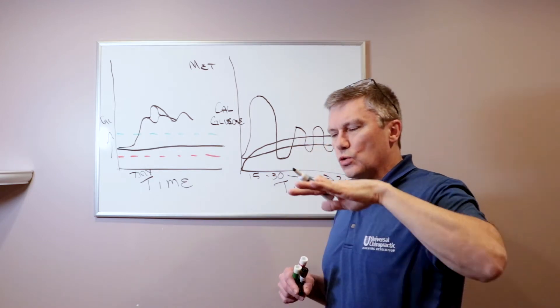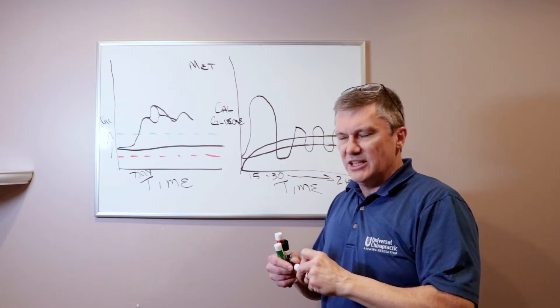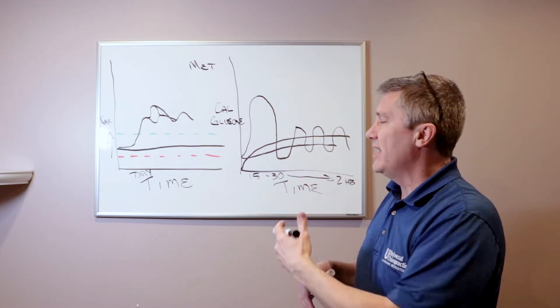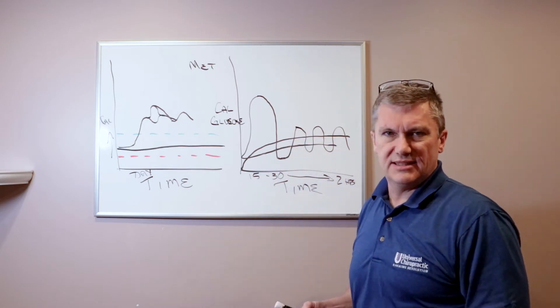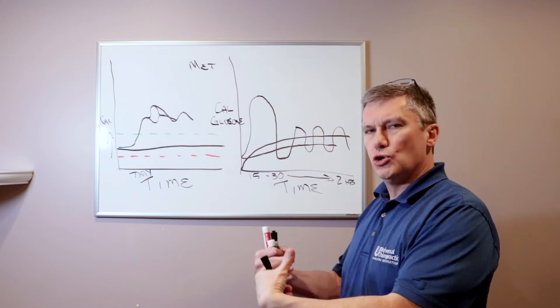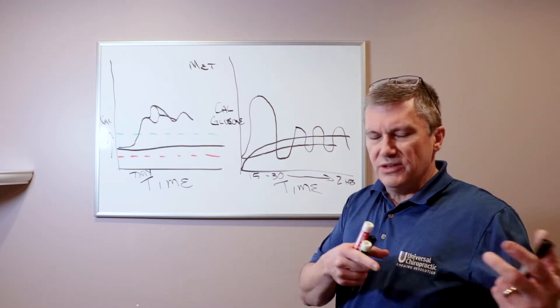We want a steady release of energy throughout the day and avoid those spikes. Our glucose level in our blood is maintained, our insulin levels are maintained. It's better from an inflammation standpoint, it's better from an overall health, and it is much better from a weight loss standpoint because now we don't have those cravings. We don't crave sugar all the time, 24/7.